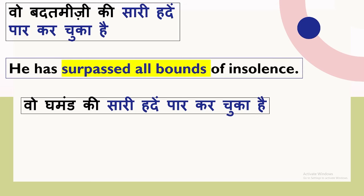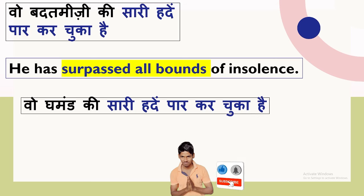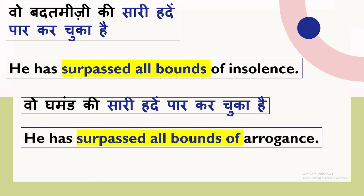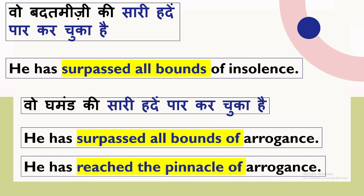He has surpassed all bounds of insolence. Insolence means rudeness, impertinence. Now, can you try to make the next sentence yourself? He has surpassed all bounds of arrogance — if that's what you said, you are right. He has reached the pinnacle of arrogance. Pinnacle means the highest point of something. So this is one more way to say the same thing.